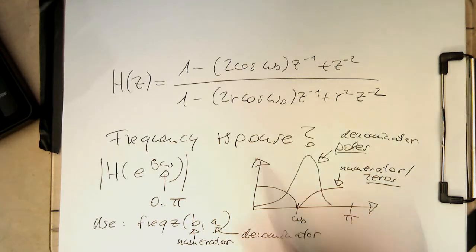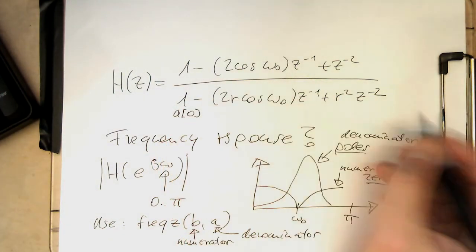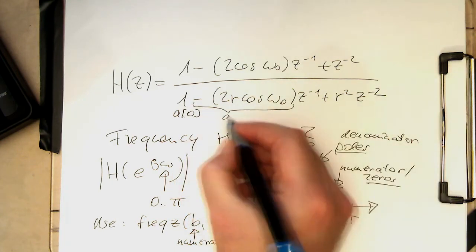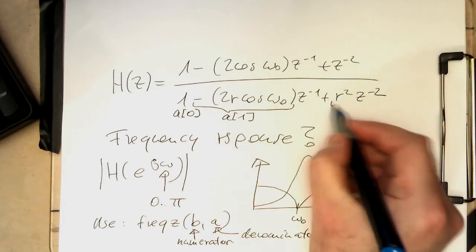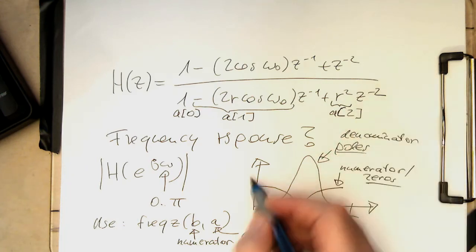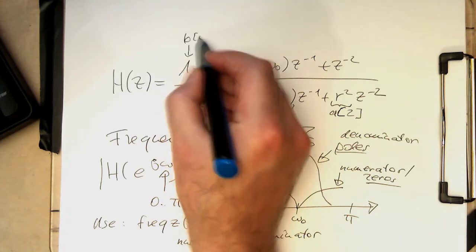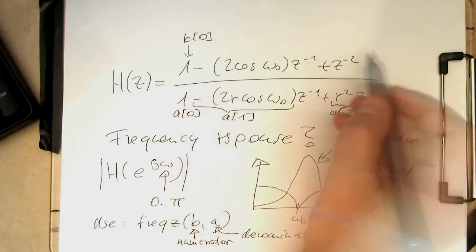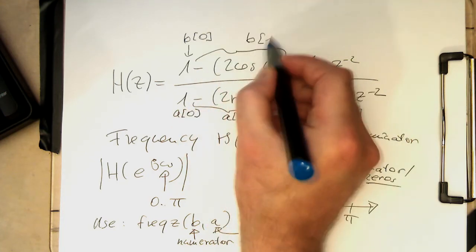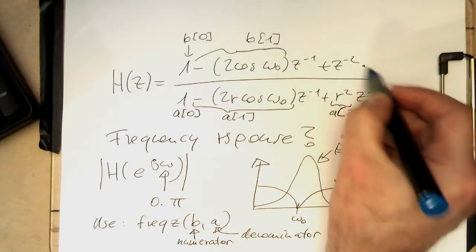So the a's here. So that's here, a of zero. And then, together with a minus here, that's a of one. And then this is here, that's a of two. And then here, here we have, that's b of zero. And then this one here, that's b of one. And this is here just a one.